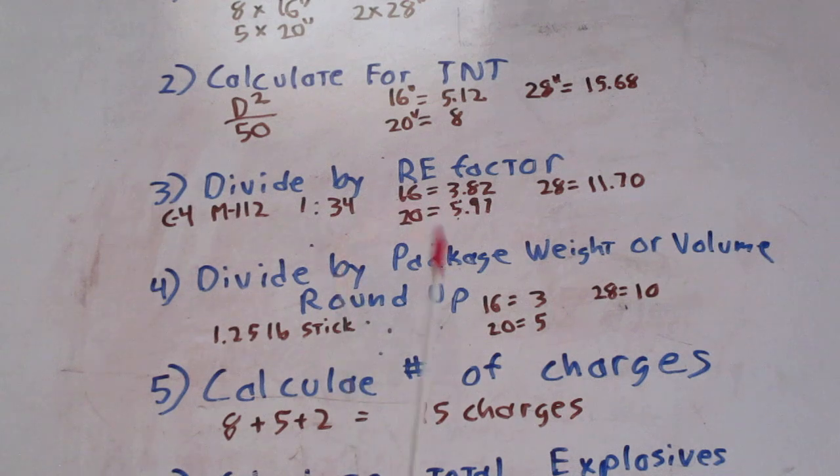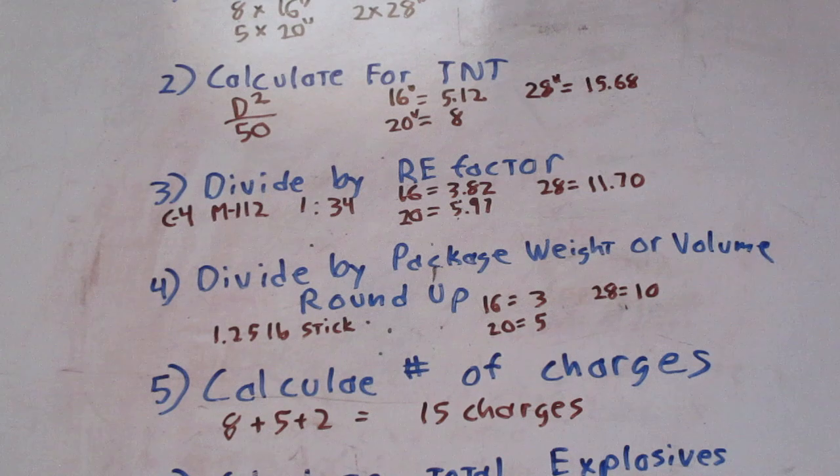When you're doing TNT, you refer to them as blocks. C4, you refer to as sticks. And the reason you refer to it as sticks is because it does have the double-sided tape on one side, so it sticks to the surface. You also refer to dynamite as sticks also because of its shape.